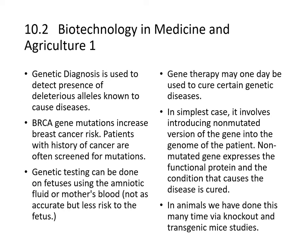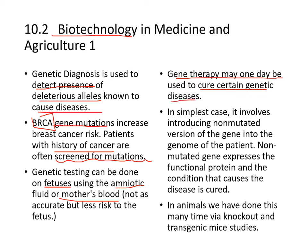In medicine and agriculture, biotechnology is also useful. Genetic diagnosis is used to detect the presence of deleterious alleles known to cause diseases. For instance, BRCA gene mutation increases breast cancer risk, so patients with a history of cancer are often screened for these mutations. Genetic tests can also be done on fetuses using amniotic fluid or mother's blood — not as accurate, but less risk to the fetus. Gene therapy may one day cure certain genetic diseases by introducing a non-mutated version of the gene into the patient's genome, allowing expression of the functional protein.